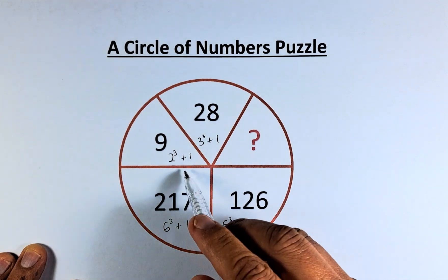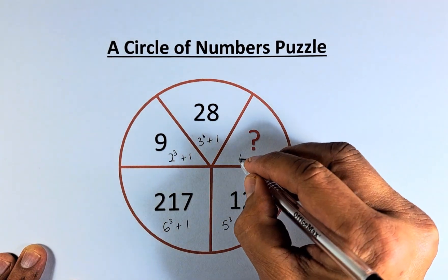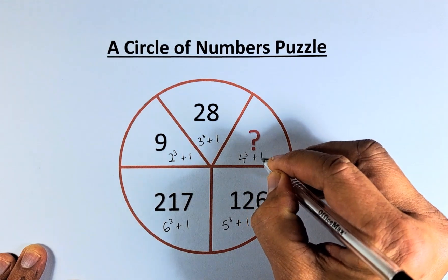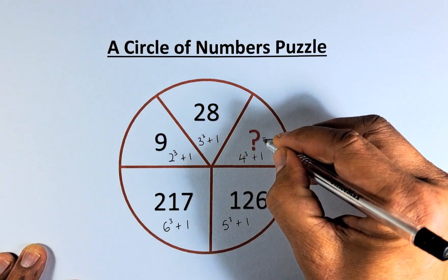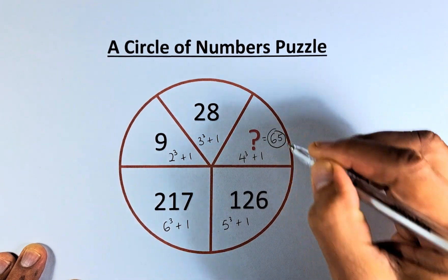What is the question mark? So it's 2, 3, 4, 5, 6, so that must be 4 cubed plus 1. 4 cubed is going to be 64 plus 1, and the question mark is equal to 65.